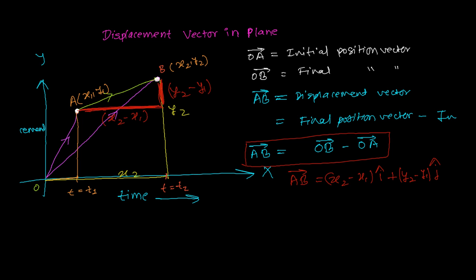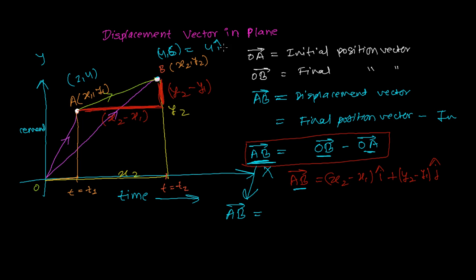Let's work through an example. Suppose the coordinate of point A is (2, 4) and the coordinate of point B is (4, 6). To find the displacement vector, there are two methods: one using the final and initial position vectors, and the other by directly applying the formula.